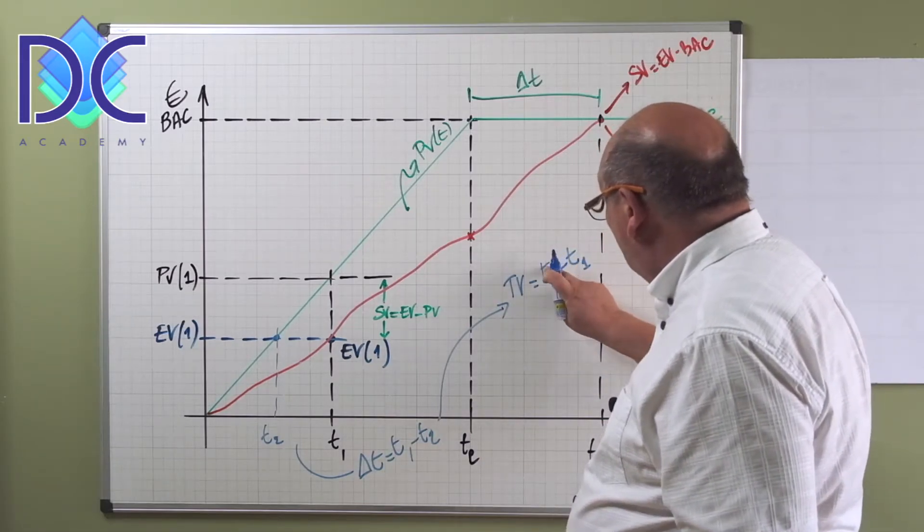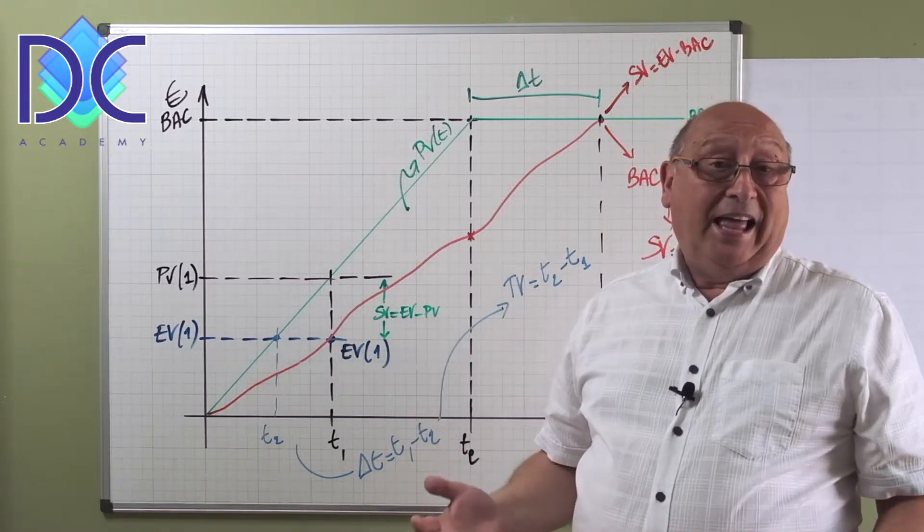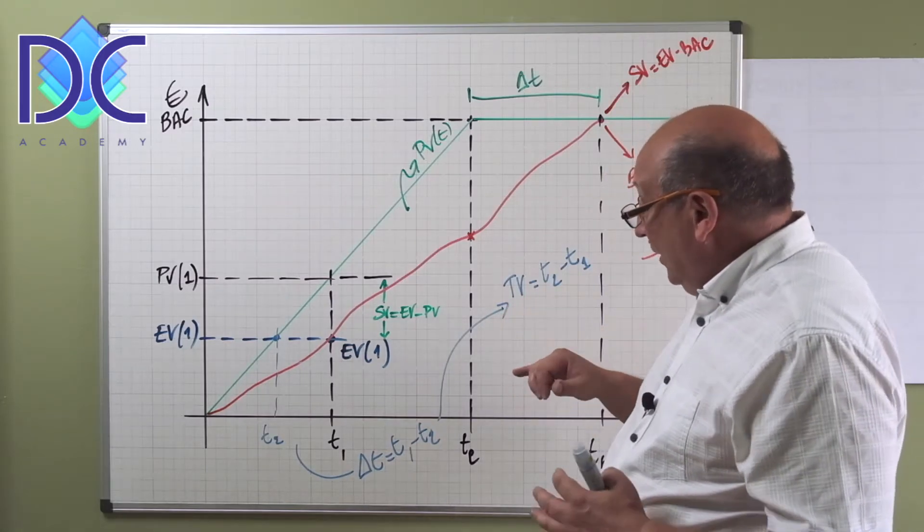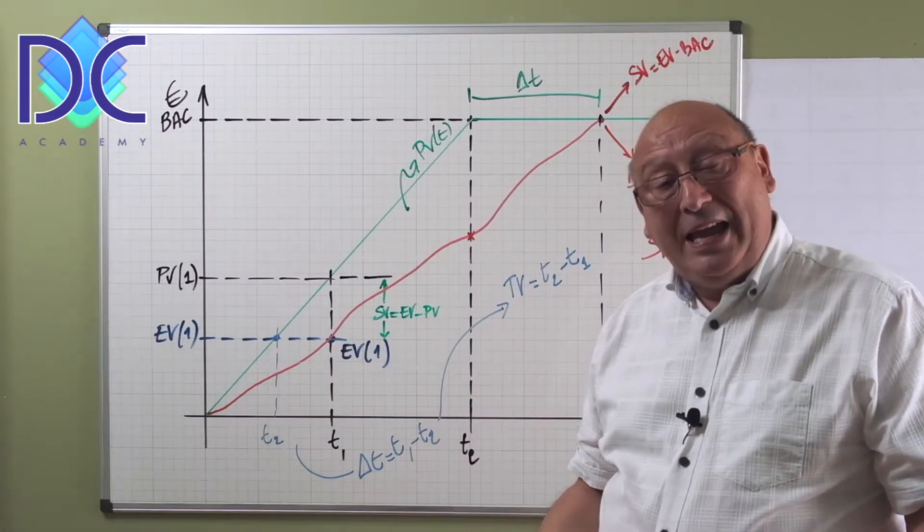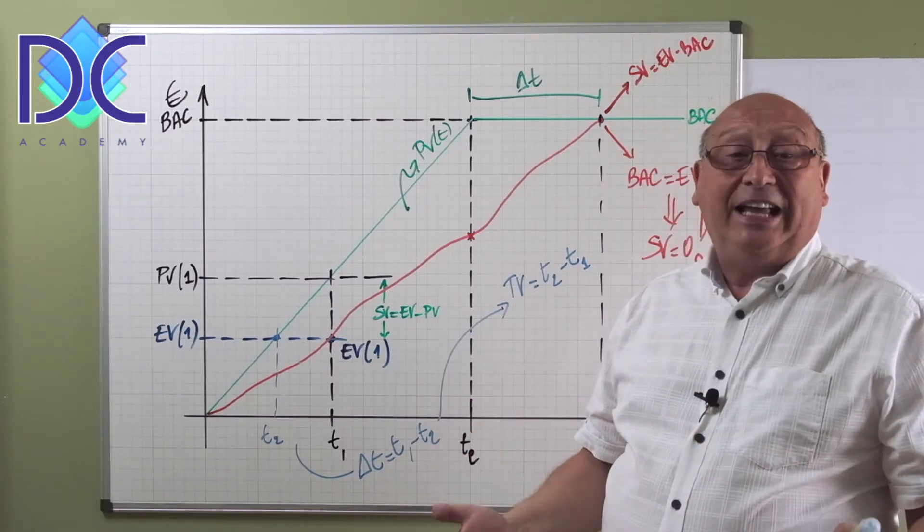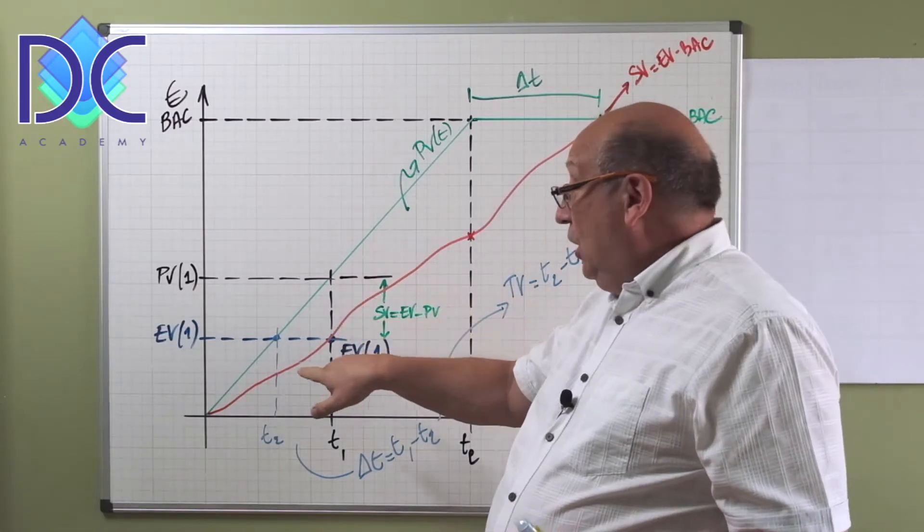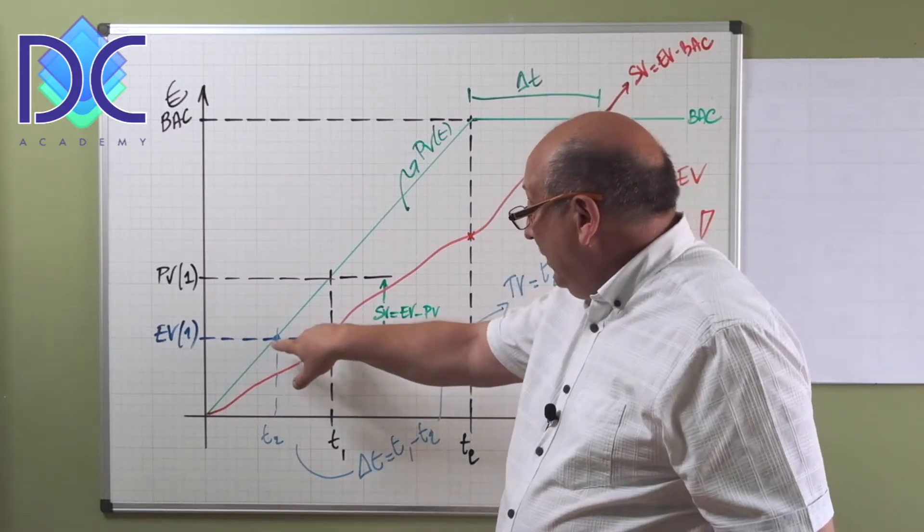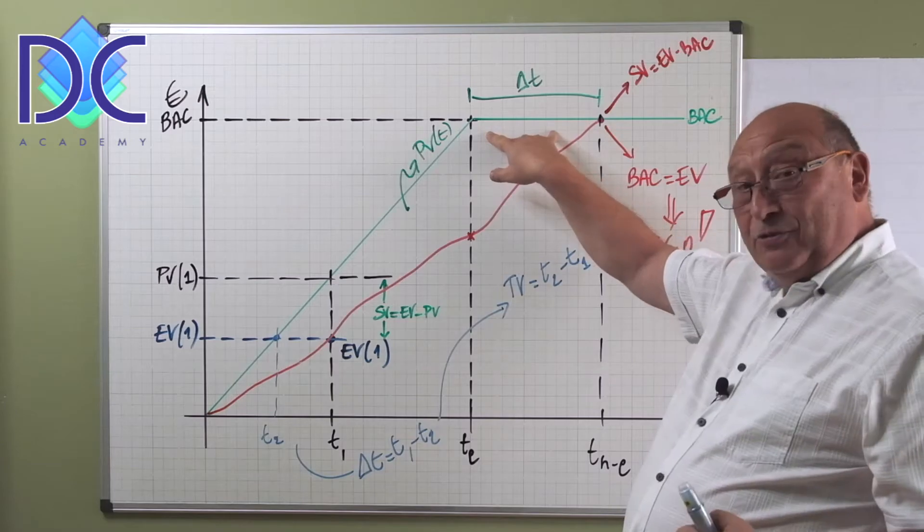Or when we put it as a new parameter, we can call this the time variance, which is then t2 minus t1, which again gives us a negative value while we are late. So the time variance, which is in fact looking at it a different way, and we call this earned schedule. We are not looking at the amount anymore, but we really look at the time difference.